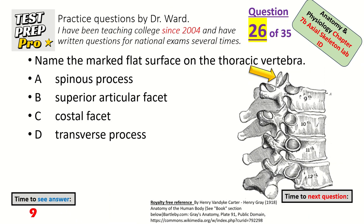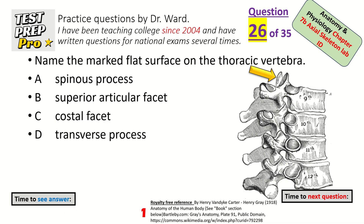Name the marked flat surface on the thoracic vertebra — these are top flat surfaces that point posteriorly. Superior articular facet.